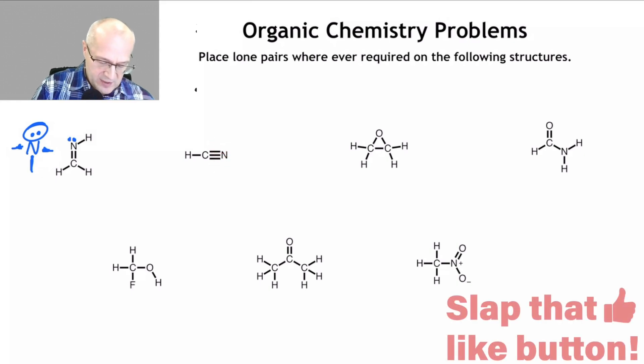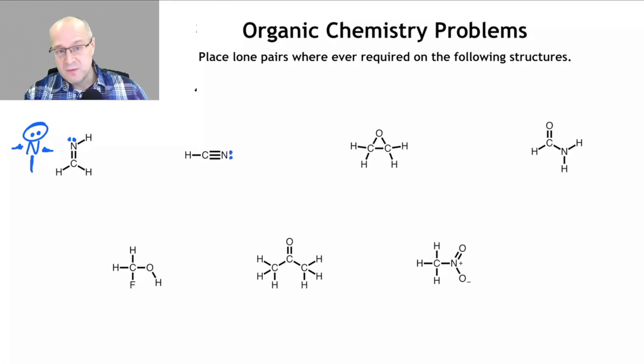Nitrogen. Two, four, six. Nitrogen is missing the octet. So draw a lone pair on there. There we go. Remember, nitrogen, normal neutral nitrogen has a lone pair. So here it is again, has a lone pair.